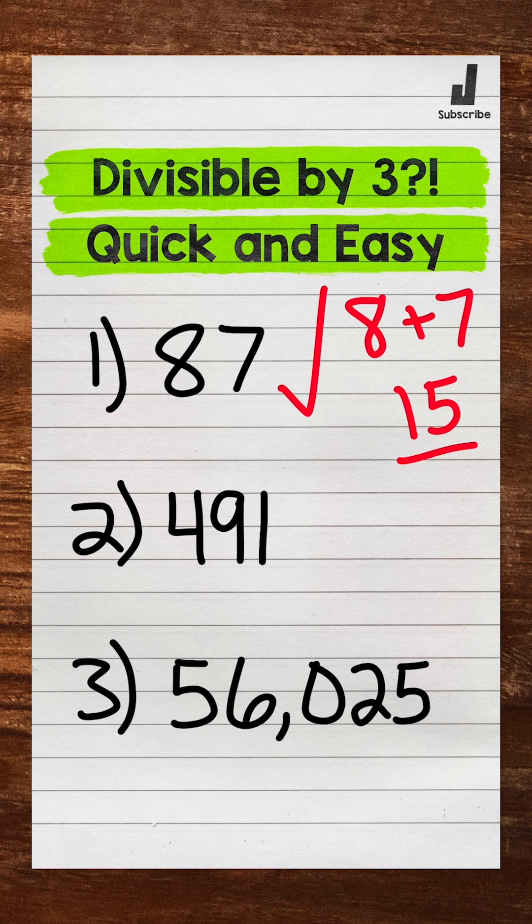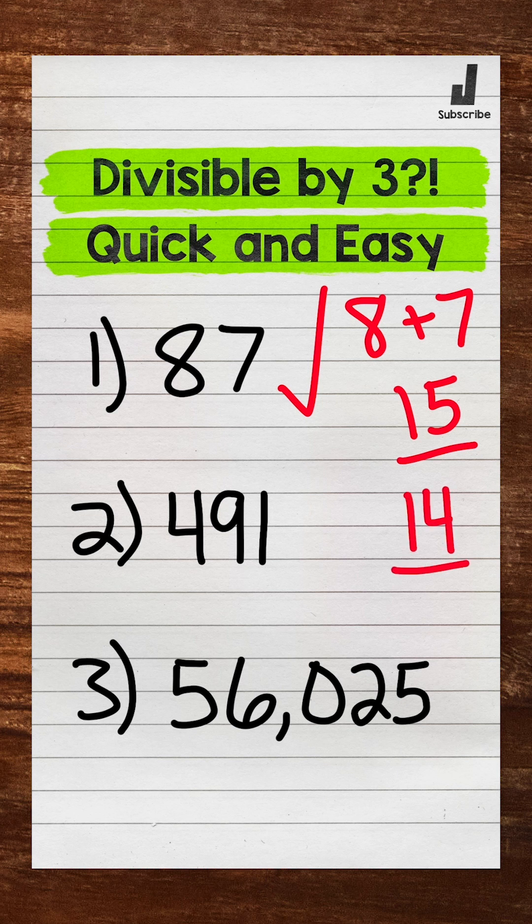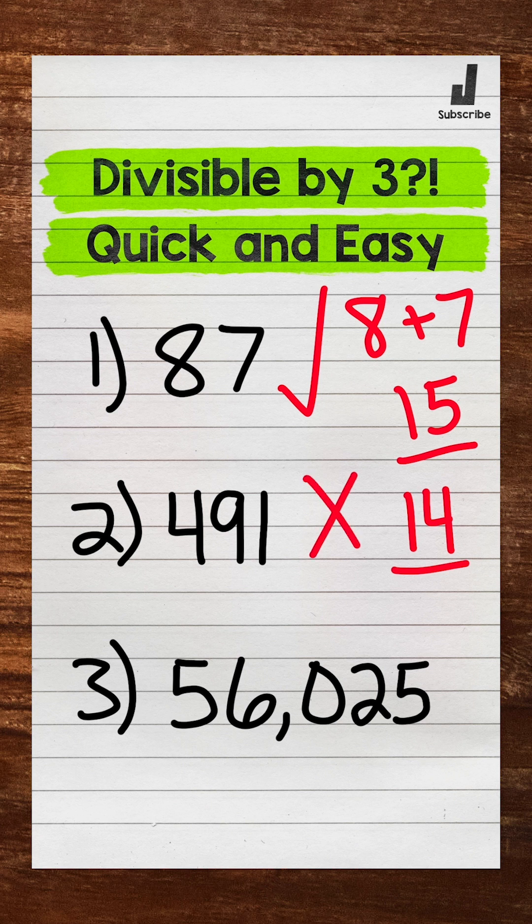How about 491? 4 plus 9 plus 1 is 14. Is 14 divisible by 3? No, so 491 is not divisible by 3.